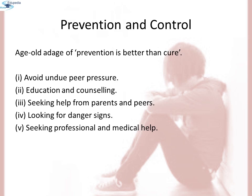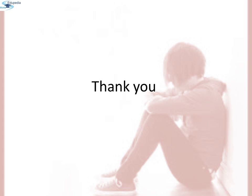Some measures for prevention and control of alcohol and drug abuse among adolescents include: first, avoid undue peer pressure; second, education and counseling; third, seeking help from parents and peers; fourth, looking for danger signs; and fifth, seeking professional and medical help. Thank you. Thus I am winding up this chapter. In the next video we will be moving towards the next chapter, organisms and populations.